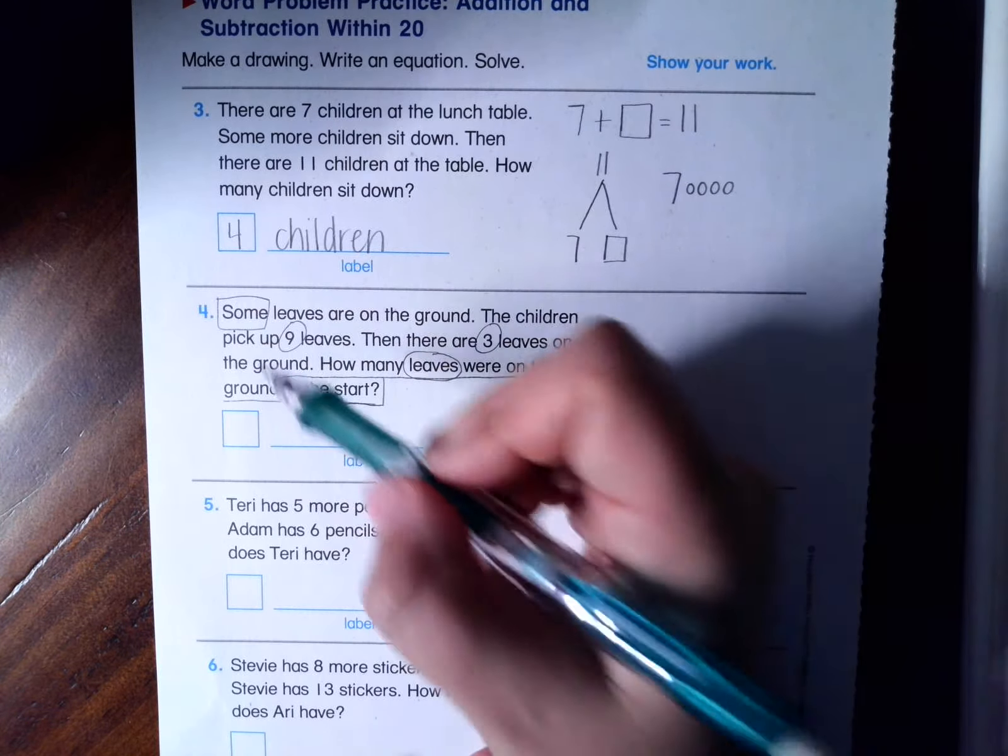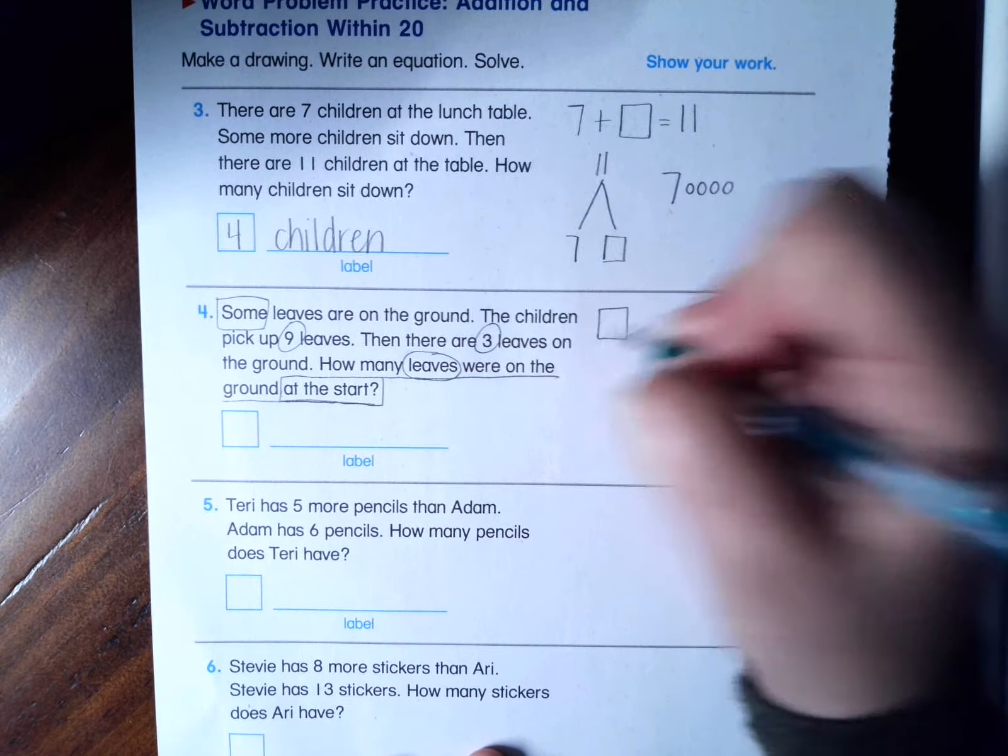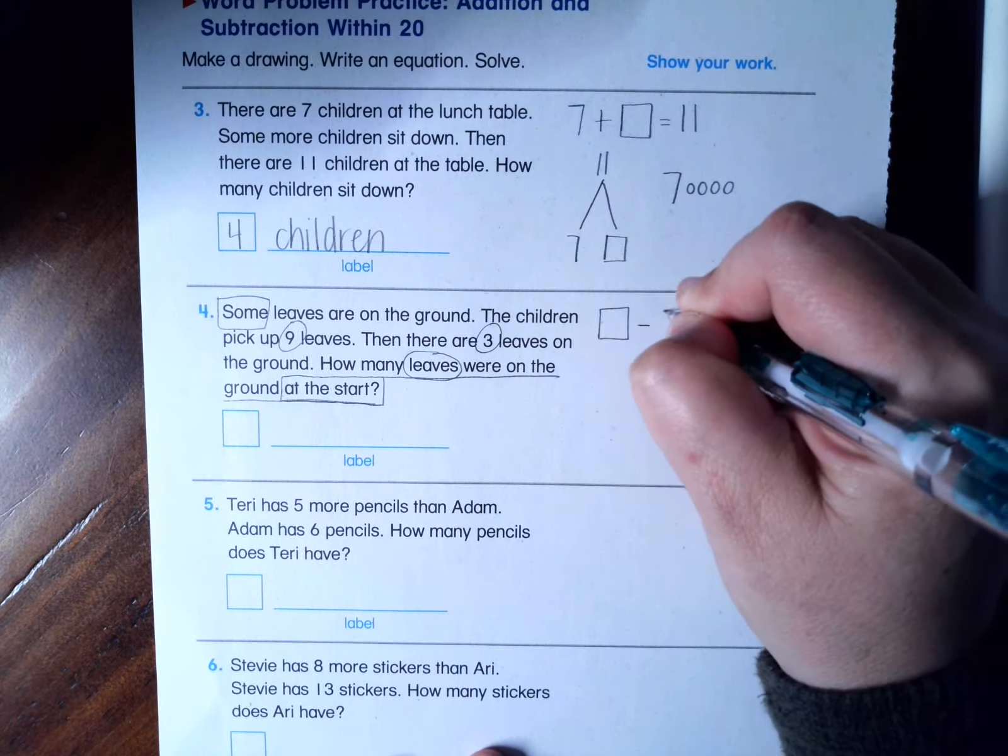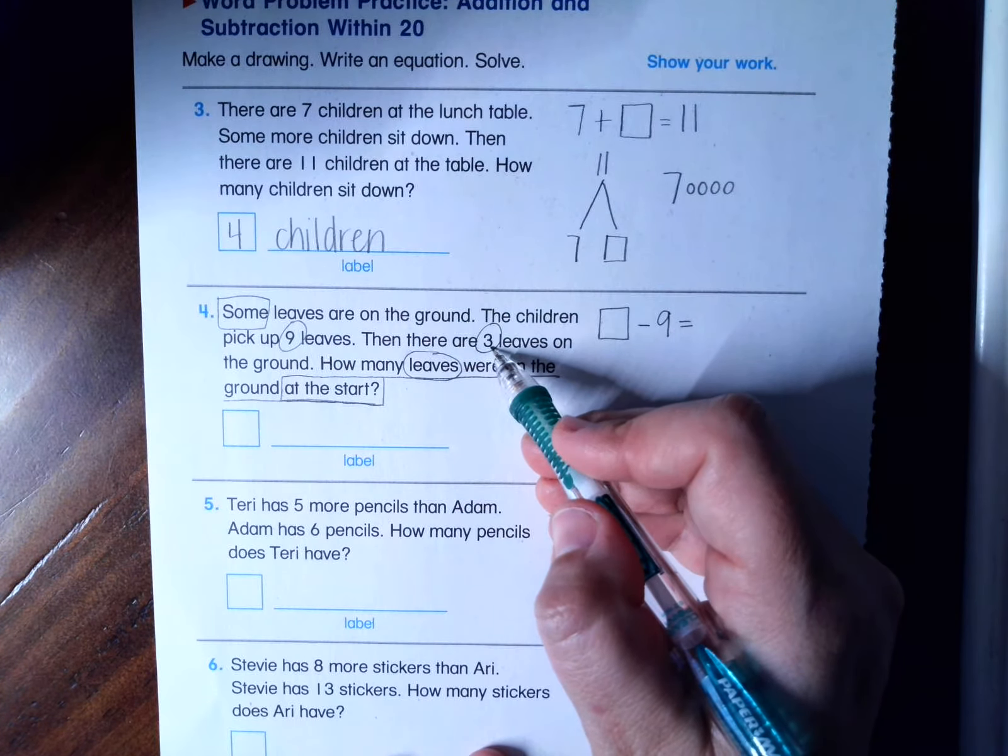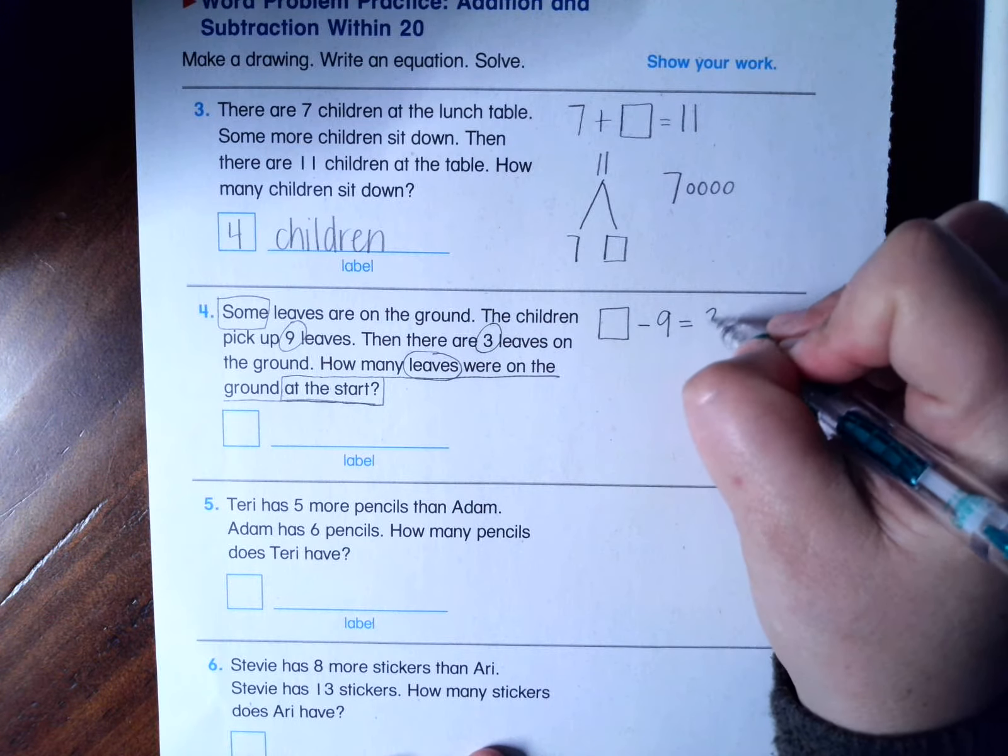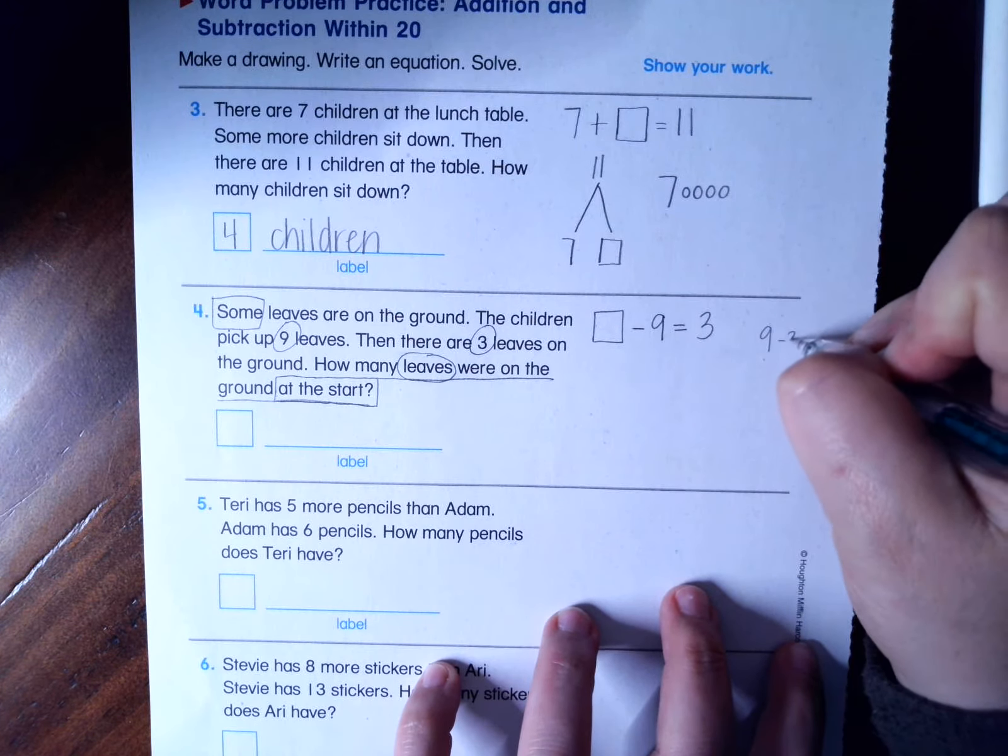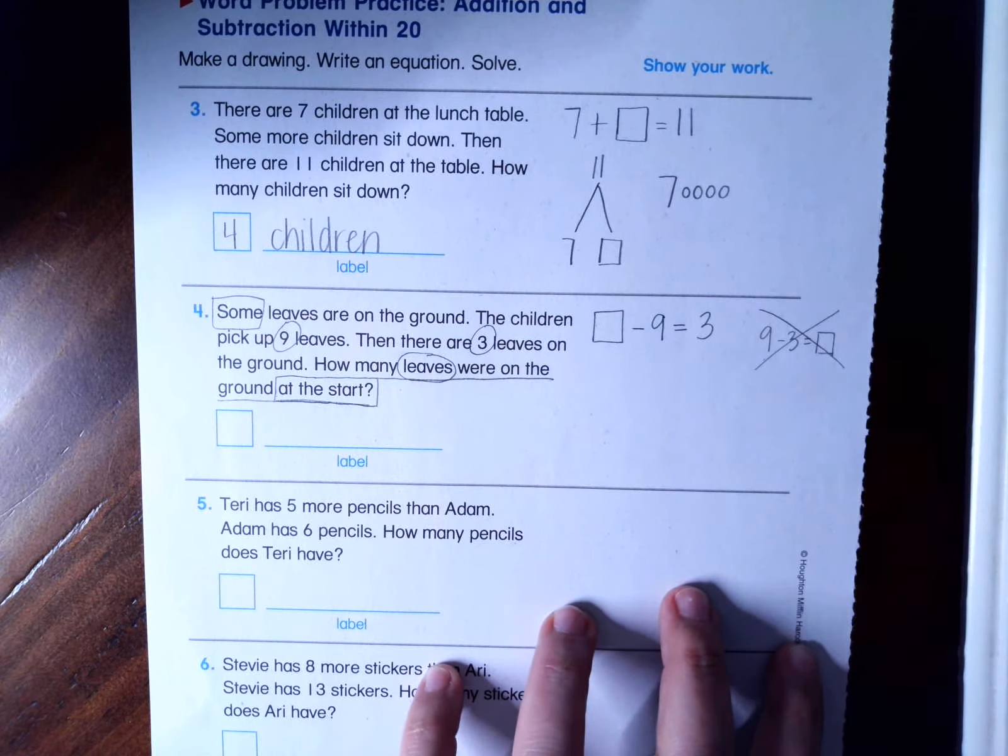So we know that there are some leaves on the ground. We know that the children pick up nine of them. So I'm actually going to subtract nine. And now there are three left. So is this the same as nine minus three equals box? No, it's not.